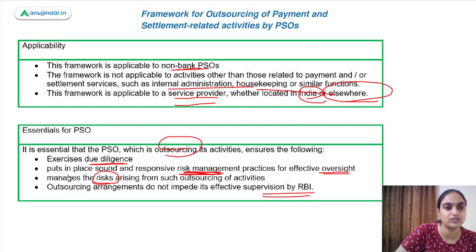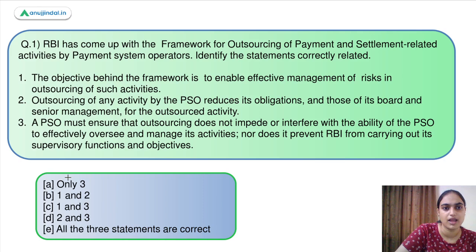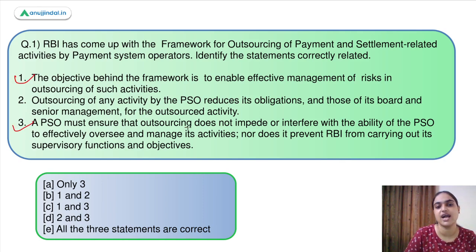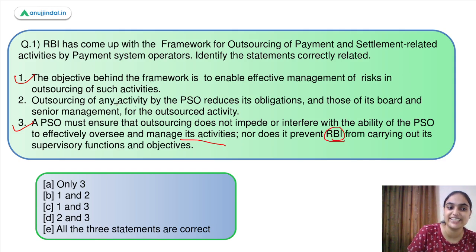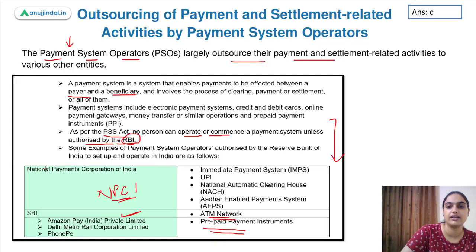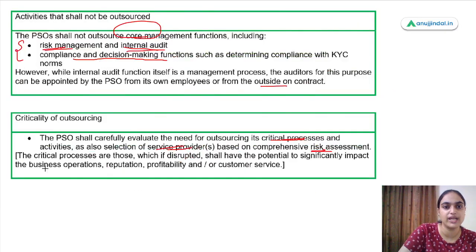Looking at question 1: statement one is correct, which mentions the objective. Statement three is also correct, which says outsourcing should not impede the ability of PSOs to oversee or manage activities, nor create problems for RBI's supervision. Statement two is incorrect, because it says outsourcing reduces your obligation — but ultimately the PSO remains responsible. So the answer is option C: one and three are correct.